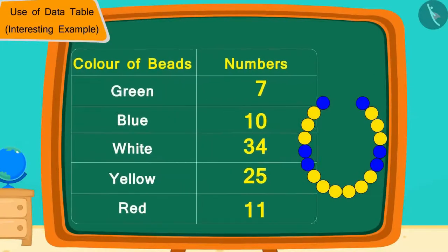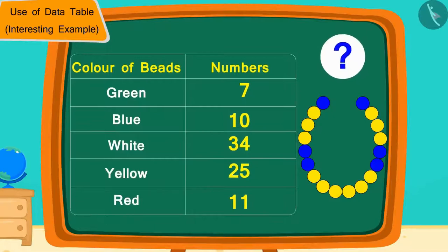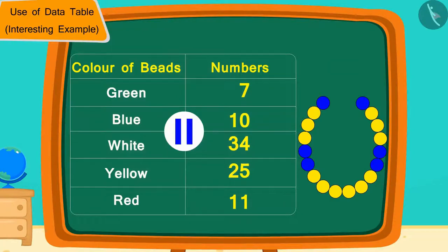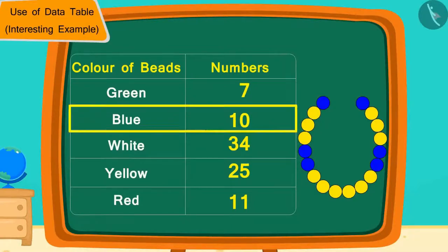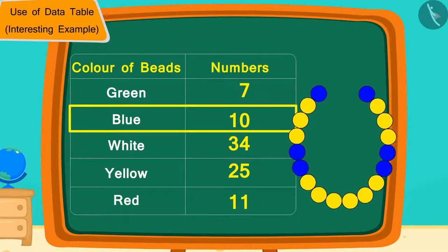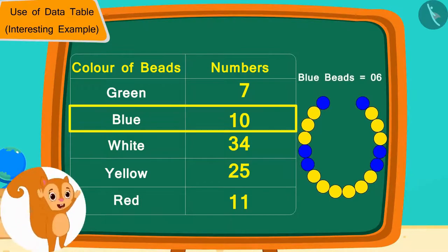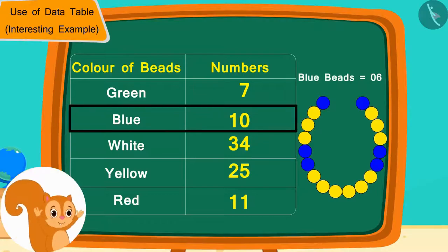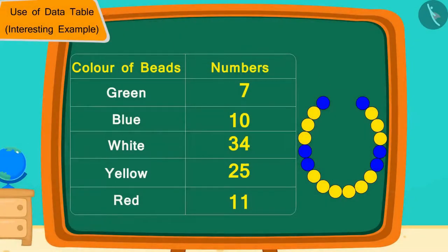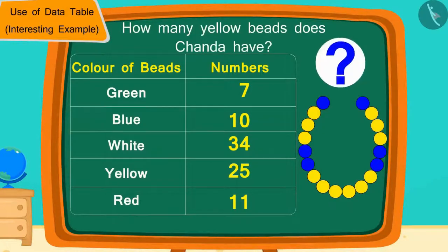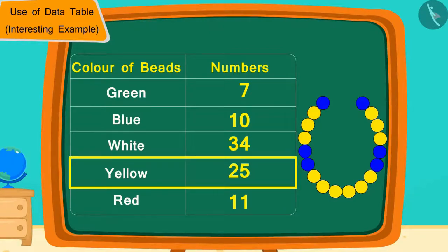Chanda remembered she could find a solution by making a data table. She and Golu together counted the number of beads and wrote them in a data table. Children, can you see this table and tell if they have enough beads to make their necklace? Chanda has 10 blue beads and only needs 6 — so she has enough. She also has 25 yellow beads and only needs 12.